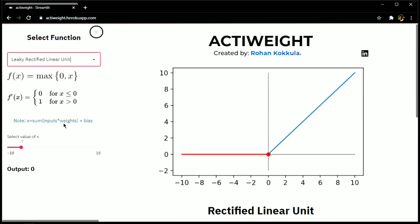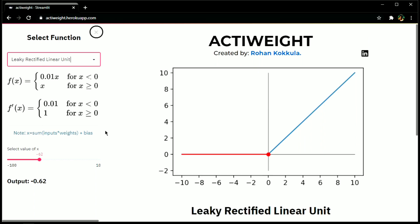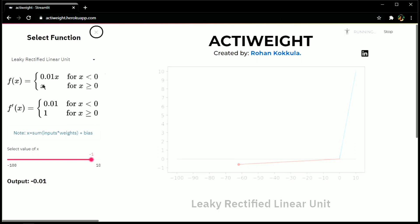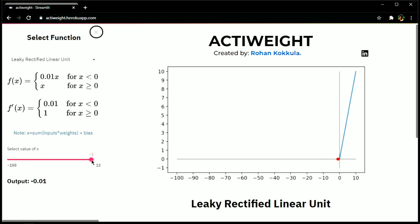To avoid dying of neuron for negative values, leaky relu comes to the rescue. The formula stays same for the positive values i.e. linear and for negative values it is 0.01 into x, which is 1% of the negative value, which helps the neuron not to die in case of negative values.